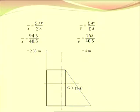So the CG for this particular dam is point G with coordinates (2.33, 4). The CG point falls in the rectangular portion, as shown in the picture.